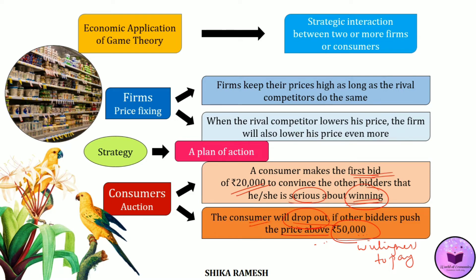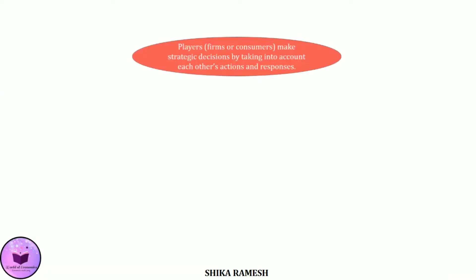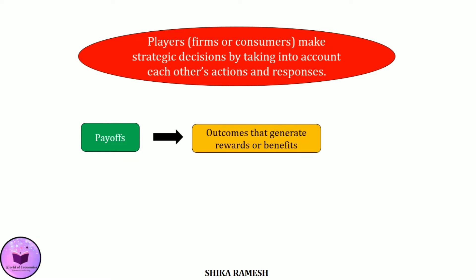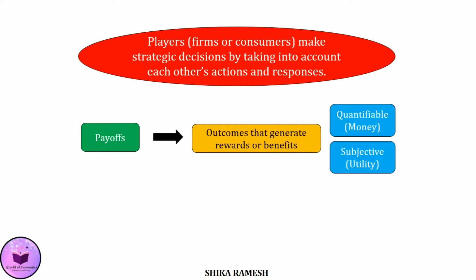In the examples of firms and consumers, we can see that both are having their own strategy, moving strategically based on their opponents' or rivals' actions. Such strategic decisions result in payoffs to the players. A payoff is the outcome that generates rewards or benefits — it is simply the value associated with a possible outcome. It can be in quantitative terms or in subjective terms such as utility, that is the satisfaction one receives from the possible outcome.